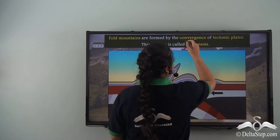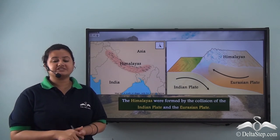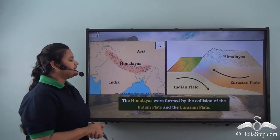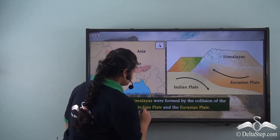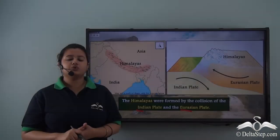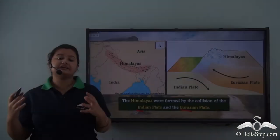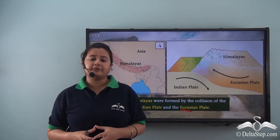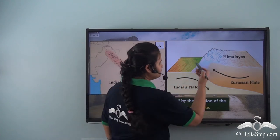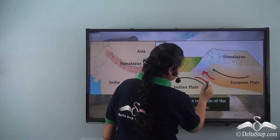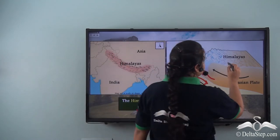Fold mountains are formed by the convergence of tectonic plates. The Himalayas were formed millions of years ago by the convergence of the Indian plate and the Eurasian plate. The modern world was formed by the continuous interaction of tectonic plates. The Eurasian plate is less dense than the Indian plate, so the Eurasian plate moved up while the Indian plate subducted, causing the overlying rocks to fold and form the Himalayan mountain range.